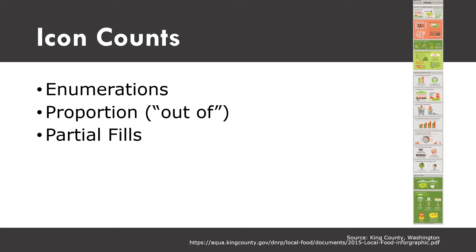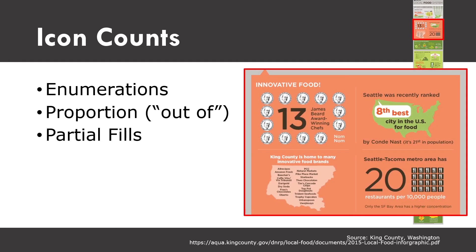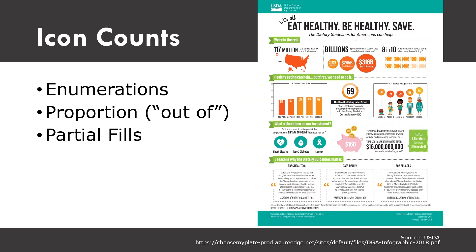Using icons with actual data visualization also occurs across infographics. One of the most common ways, as you'll see on this infographic about local food in King County, Washington, is straight-up enumeration. Here we have 13 James Beard award-winning chefs and we have 13 James Beard Award icons located around it. We also have 20 restaurants per 10,000 people and we have 20 icons of forks and knives next to that number.